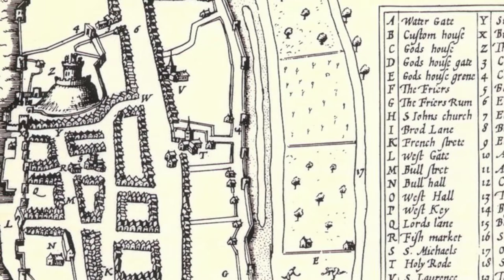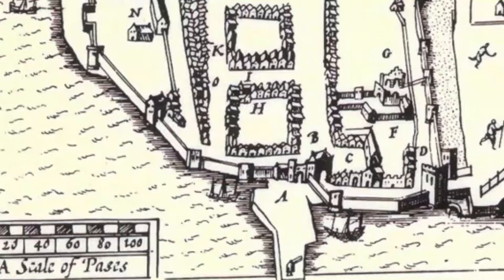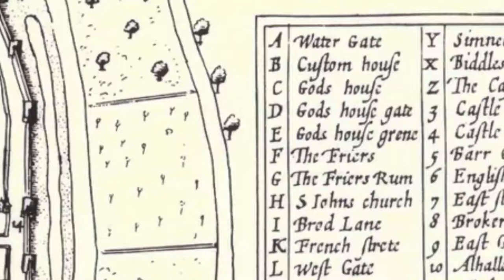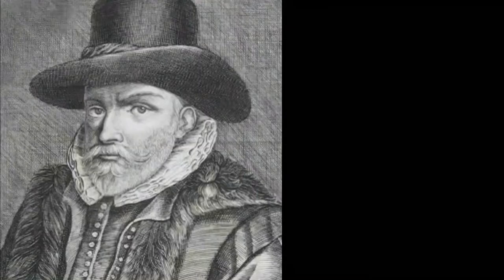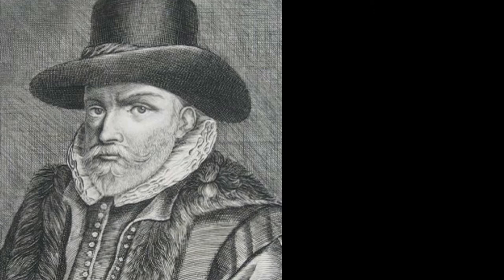It's a beautifully detailed map of Southampton, complete with scale and key, which means it's really the earliest in-depth map of Southampton that we have. The map was created by a historian and mapmaker, though initially a tailor, called John Speed.